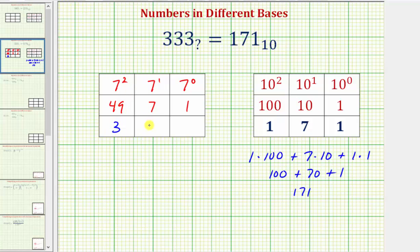333 in base 7 is equal to three times 49 plus three times seven plus three times one. Three times 49 is equal to 147. Three times seven is equal to 21. And three times one, of course, is three. I think we have it here. 147 plus 21 plus three is equal to 171 base 10. So we've discovered that 333 base seven is equal to 171 base 10.